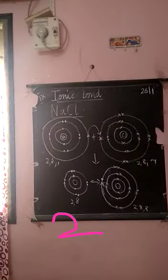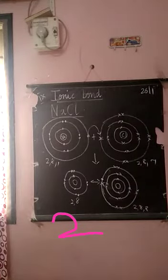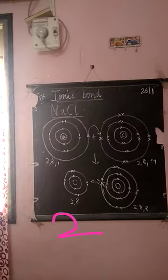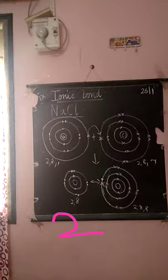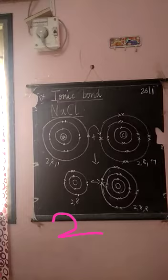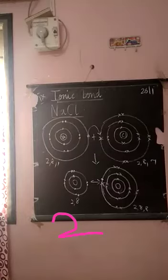This is the example for ionic bond, that is the formation of sodium chloride. You already know the atomic number for sodium atom is 11. So, what is the electronic configuration? 2, 8, and 1 — K shell, L shell, M shell.